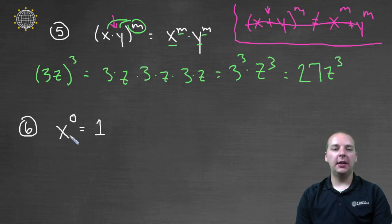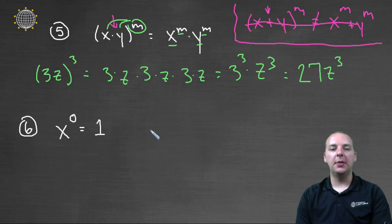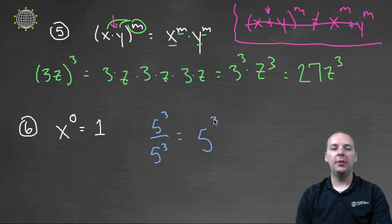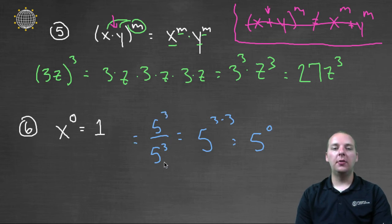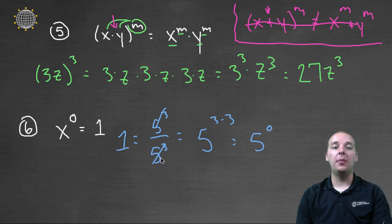The last property doesn't really need much explanation: x to the zero power is automatically one. Here's an example: if you had five to the third divided by five to the third, using the division property, we subtract the exponents and get five to the three minus three, which would make five to the zero. But what is five to the third over five to the third? Those are the same thing, so that's going to give you one. That's how we know anything to the zero power is one — you'd have the same quantity in the numerator and denominator, and when they cancel, that equals one.